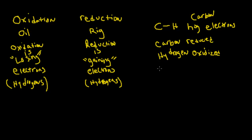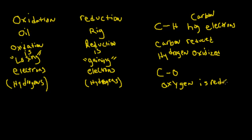Let's use another example. We have carbon bonded with oxygen, and oxygen is a lot more electronegative than carbon, so therefore oxygen is going to be reduced and carbon is going to be oxidized. Oxygen is hogging the electrons from carbon.